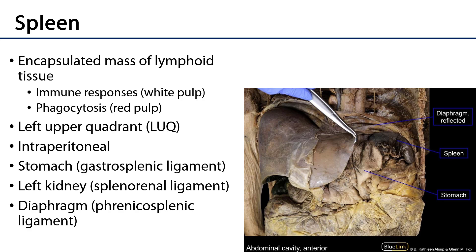The spleen is located within the left upper quadrant, or the left hypochondriac region. It is an intraperitoneal organ that is going to have peritoneal ligaments attaching it to surrounding structures.